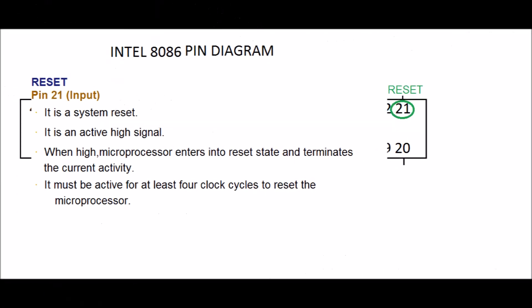Reset, PIN 21. Input. It is a system reset. Microprocessor accumulator is reset. The value in accumulator becomes 0. It is an active high signal. When high, microprocessor enters into reset state and terminates the current activity. It must be active for at least 4 clock cycles to reset the microprocessor. After 4 clock cycles it's disabled by itself.